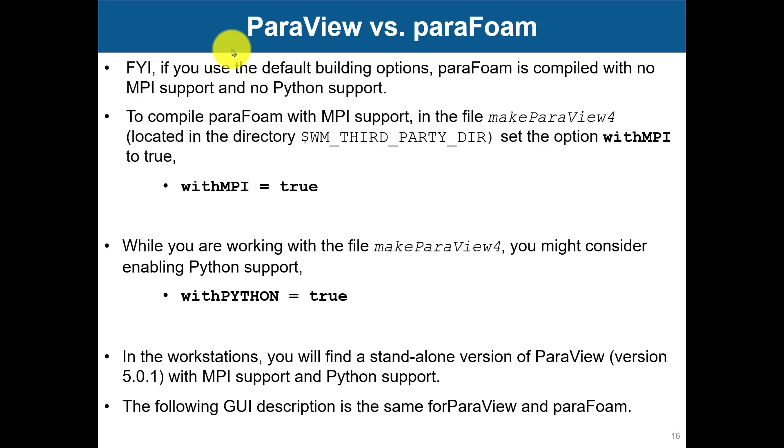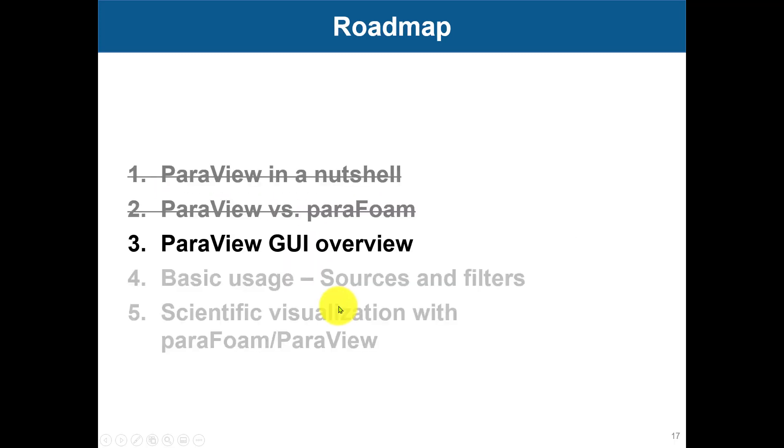Another reason to use ParaView is that if you use the pre-compiled binaries, you will have it with the MPI edition, with Python that sometimes can be really helpful if you want to do things parametrically. So that is another good reason just to use the pre-compiled binaries where everything already is enabled, or compile with the options enabled.